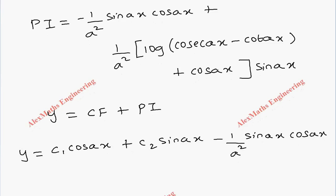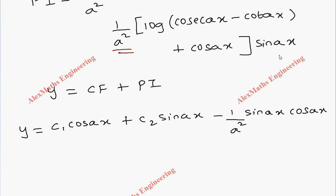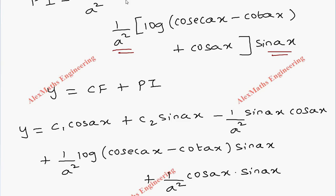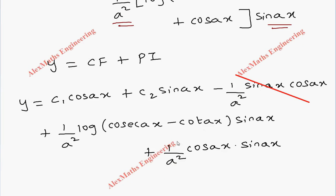Expanding the second term: 1/a² times sin(ax) into log|cosec(ax) minus cot(ax)|, plus 1/a² times cos(ax) times sin(ax). We find that the term minus 1/a² sin(ax)cos(ax) and plus 1/a² sin(ax)cos(ax) are similar with opposite signs, so both terms cancel each other.